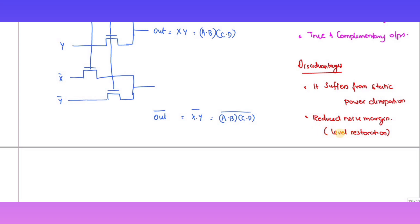To overcome the noise margin problem, the methods are: first, level restoration; second, sizing with transmission gate; and third, using multiple threshold transistors.